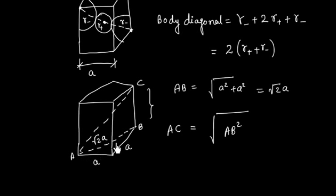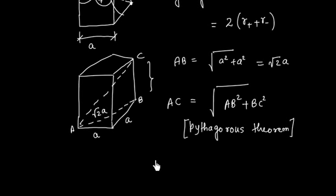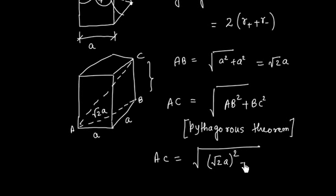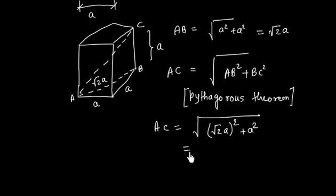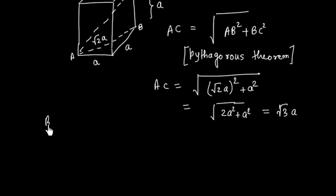AC equals √(AB² + BC²). AB is √2·a and BC is a, because this is a cube and all lengths are a. So AC = √(2a² + a²) = √(3a²) = √3·a. Therefore, the body diagonal AC equals √3·a.